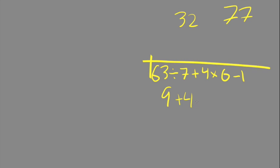The class agreed that we do 63 ÷ 7 first because it's division and it's left to right. That gives me 9 + 4 × 6 - 1. Then they added 9 + 4 to get 13 × 6 - 1, and 78 - 1 is 77. Let's work the problem again.